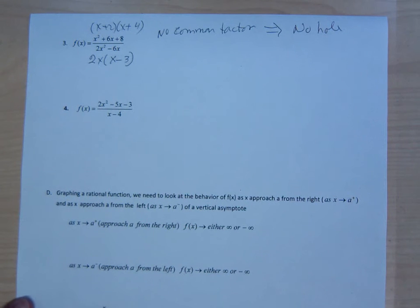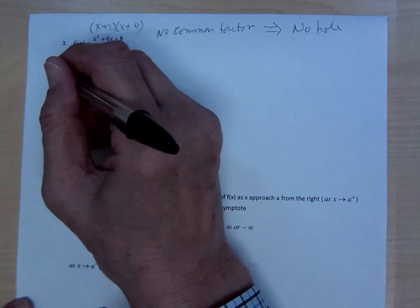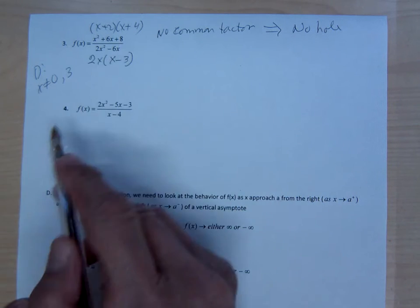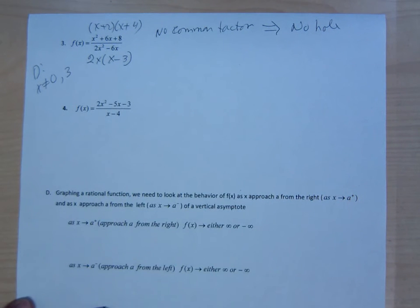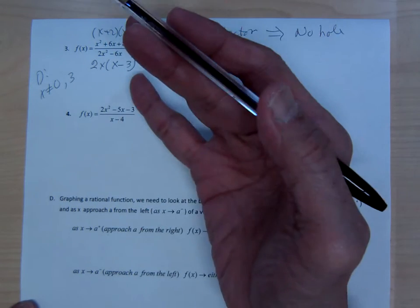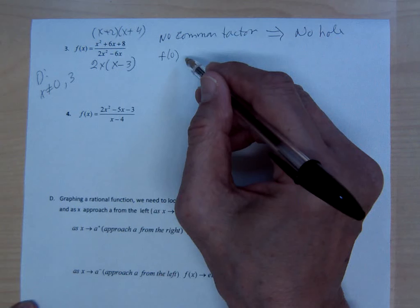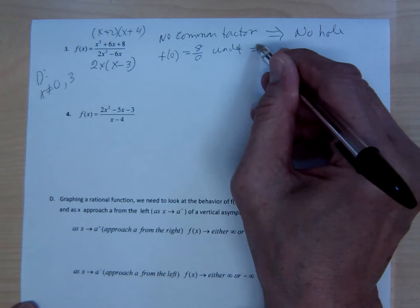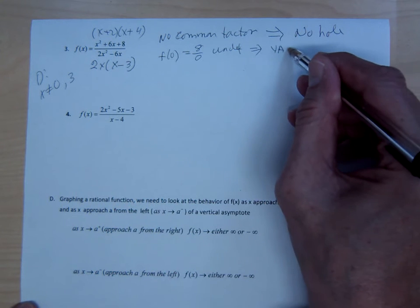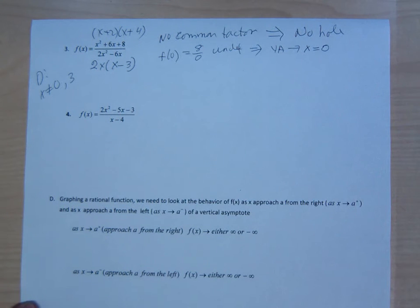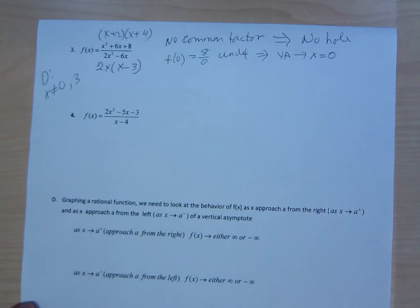Let's go to the next one. Your domain: x cannot equal 0 and x cannot equal 3. So both 0 and 3 are restrictions. This is already in reduced form. What's f(0)? f(0) is going to give you 8 over 0, which is undefined. This implies you have a vertical asymptote at x equals 0, which is the y-axis.